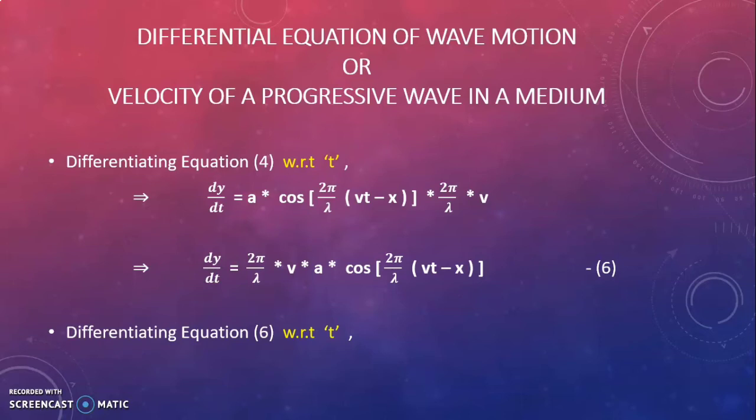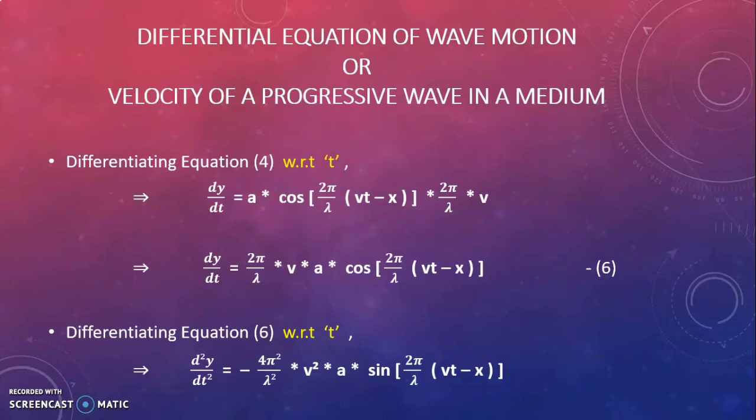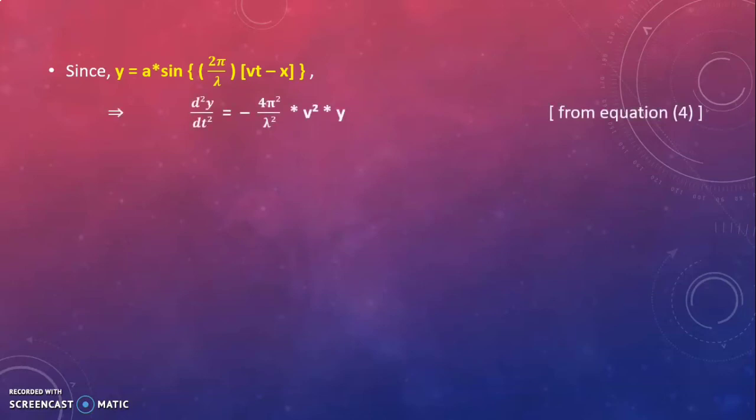Differentiating again with respect to t, that is the double differentiation of equation 4, we get d²y/dt² = −(4π²/λ²) × v² × a × sin((2π/λ)(vt − x)). Since y = a sin((2π/λ)(vt − x)), we can rewrite this as d²y/dt² = −(4π²v²/λ²) × y.